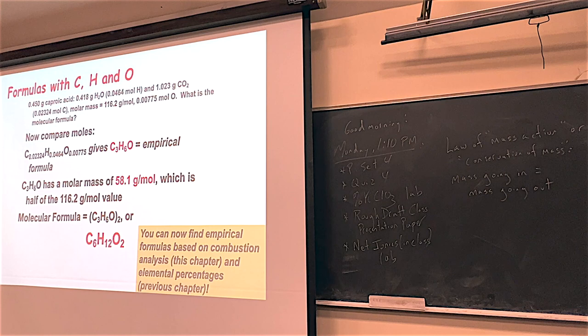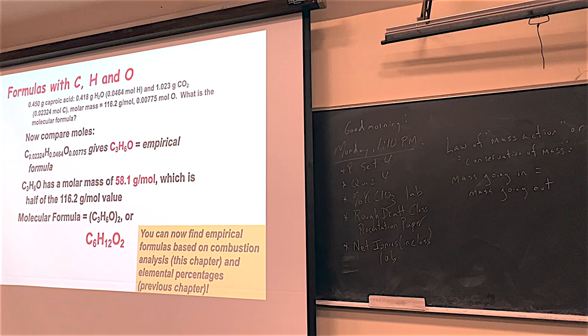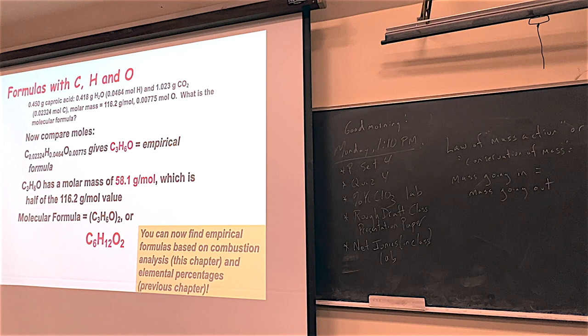At this point, you should pat yourself on the back because now you can find empirical and molecular formulas through two routes. Normally, things are done through elemental percentages — that's real common, especially when you have metals and stuff. However, these organic compounds a lot of times will use combustion reactions — they'll collect the CO2 and the water. And if you know this kind of process, you can find empirical and molecular formulas for them too.